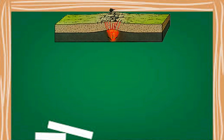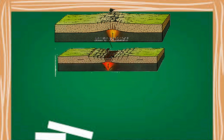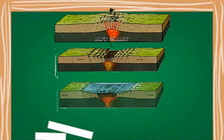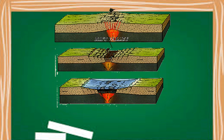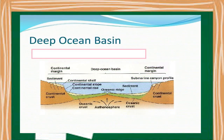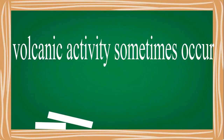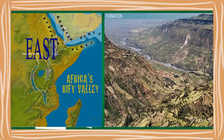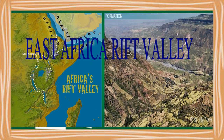As the rift grows deeper, it might drop below sea level, allowing ocean waters to flow in, producing a narrow shallow sea within the rift. If rifting continues, a new ocean basin could be produced. Volcanic activity sometimes occurs within the rift. Rift valleys are the formation resulting from the diverging of continental plates, and the East Africa Rift Valley is an example of this type of plate boundary.